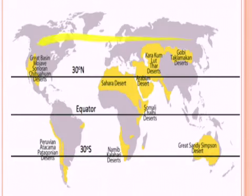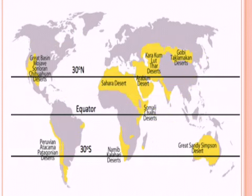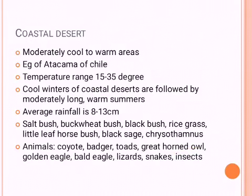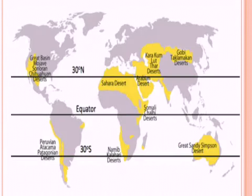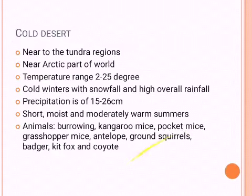Coastal deserts have temperature modification due to the coast effect — around 15 to 35 degrees — with average rainfall of 8 to 13 centimeters. Plants include saltbush, black sage, rice grass, and little leaf horsebrush. Animals include Great Horned Owl, Golden Eagle, and Bald Eagle. The Atacama Desert of Chile is close to the coast, which is why it is called a coastal desert.